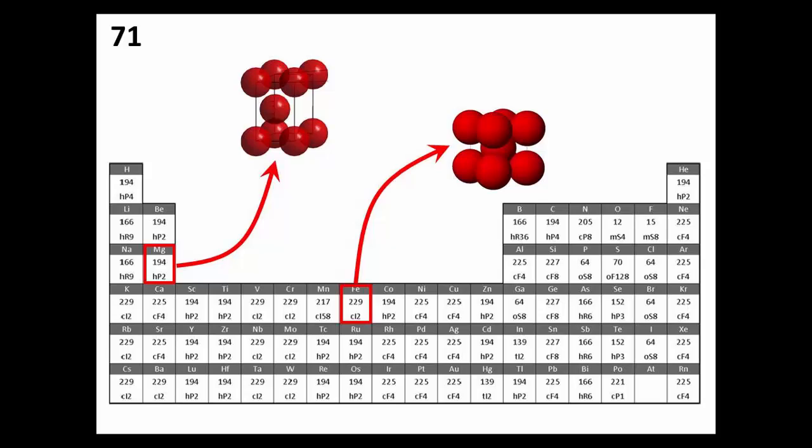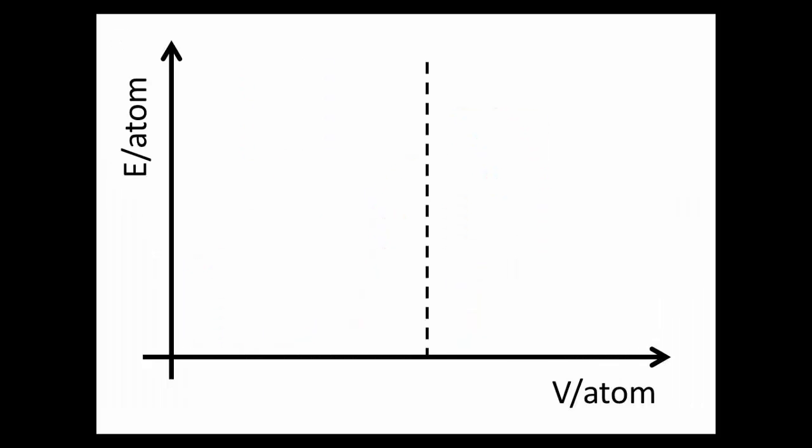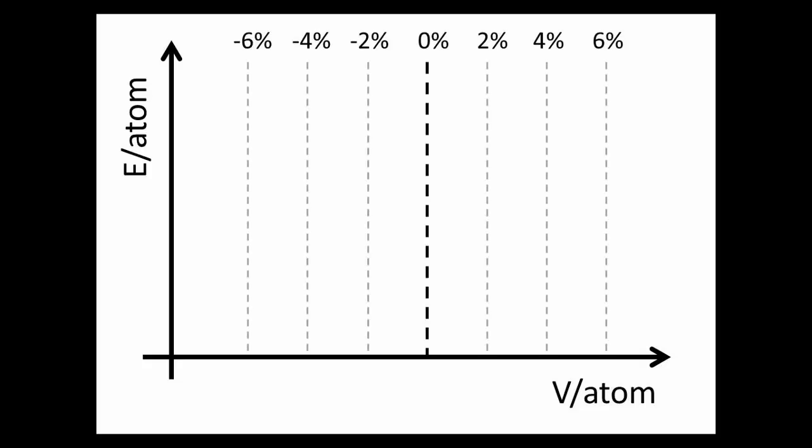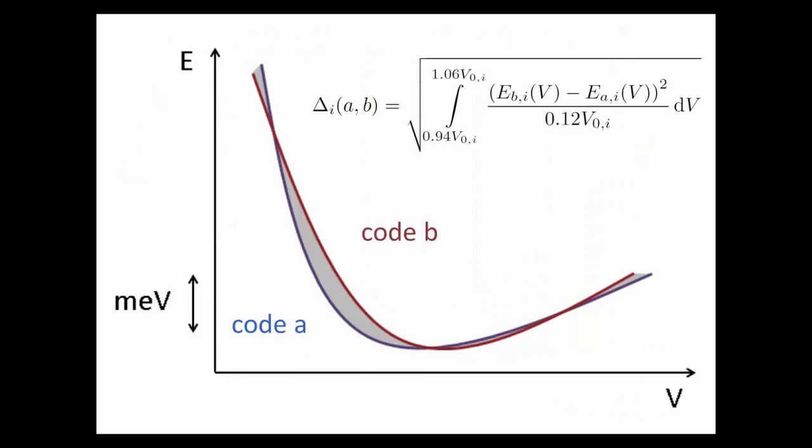For each of these crystals, we agree on some reference volume that has no particular physical significance, just a volume that is not too far away from the ground state volume. Then we take seven volumes in total, spread from minus 6% to plus 6% around this reference volume. Each of us takes their favorite tool and calculates total energies for all of these 71 elements for these volumes. So for one crystal, you get a set of energy data points like this. We fit a Birch-Murnaghan equation through that, and I do this with one code. Someone else does that with another code. We put these two cases together and inspect the differences.